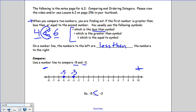So my answer will be down here, negative 5 is less than negative 3. Notice again though, it is chomping at the larger number.